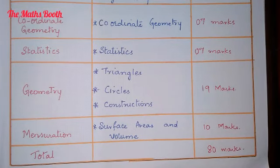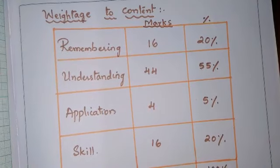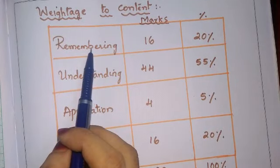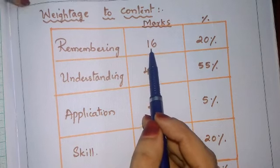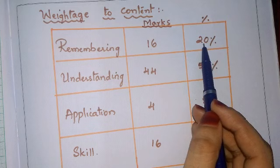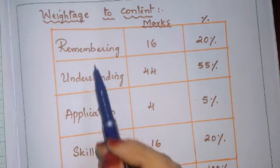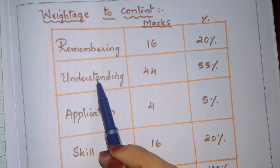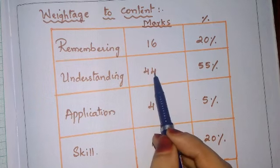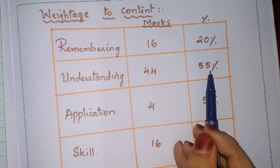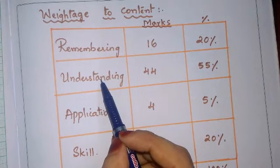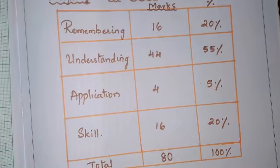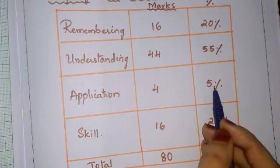Now let us see the weightage based on cognitive levels. For Remembering, that is knowledge-based questions, 16 marks — 20 percent. For Understanding type questions, 44 marks — 55 percent. So 55 percent of the question paper will be based on understanding type.